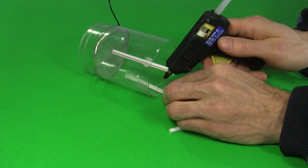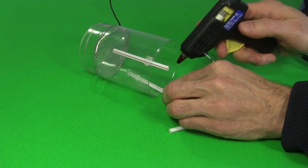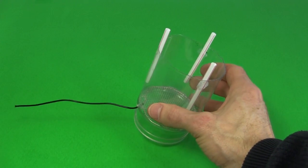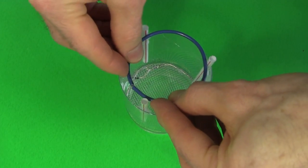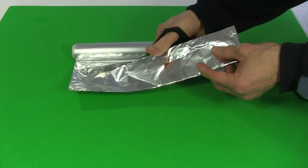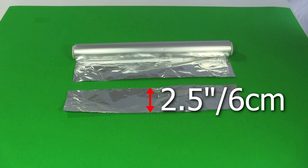Next I hot glue some straws to the inside of the jar. Any electrically non-conductive material will do. These act as supports for the next part. I make another circle of thick wire that fits within the supports. I cut a strip of aluminum foil that's longer than the wire and around 2.5 inches or a little over 6 centimeters wide.